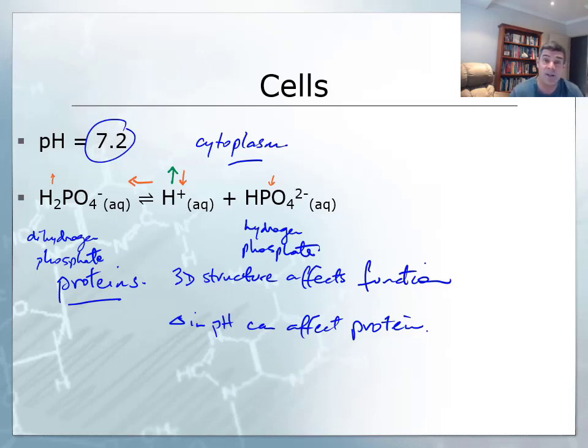Hopefully you can find a couple more examples of buffers in natural systems that you can use to explain how they try and maintain a consistent pH. Thanks for watching.